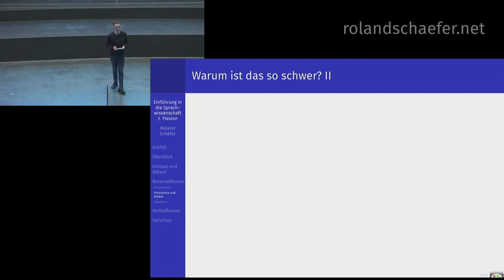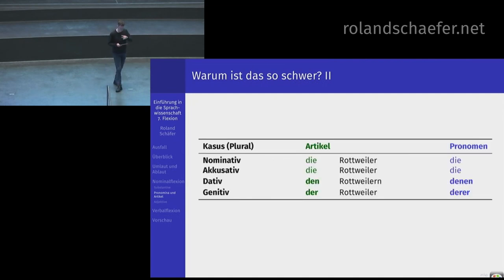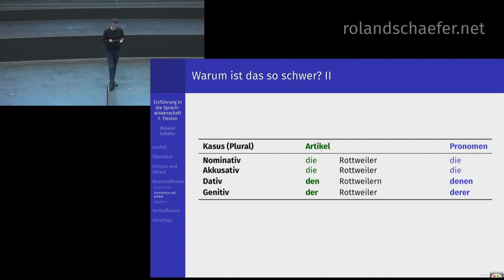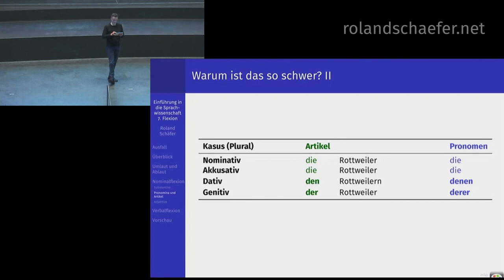Jetzt gucken wir uns einen anderen Artikel an, der ein Pronomen hat, das irgendwie scheinbar gleich aussieht. Die Rottweiler – Nominativ, Akkusativ – ich sehe die Rottweiler. Ich gebe den Rottweilern zu fressen. Das Fressen der Rottweiler würde mir nicht schmecken. Wenn Sie dieses Wort der, die, das als Pronomen anschauen: die machen Lärm – ich gebe denen zu fressen. Ich gebe denen zu fressen – nicht den. Das ist eine andere Form, kann nicht dasselbe Wort sein.